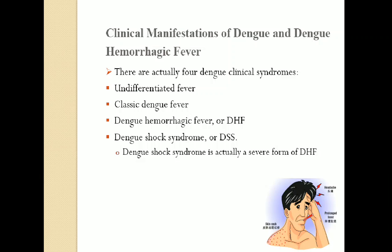Some clinical manifestations of dengue and dengue hemorrhagic fever: there are four dengue clinical syndromes. Number one is undifferentiated fever. Number two is classic dengue fever. Number three is dengue hemorrhagic fever (DHF). Number four is dengue shock syndrome (DSS) — which is actually a severe form of DHF.